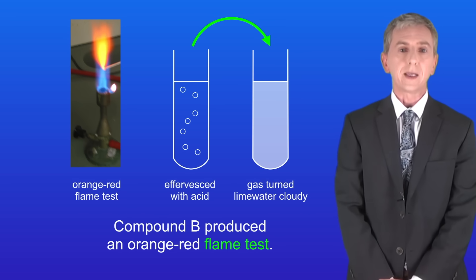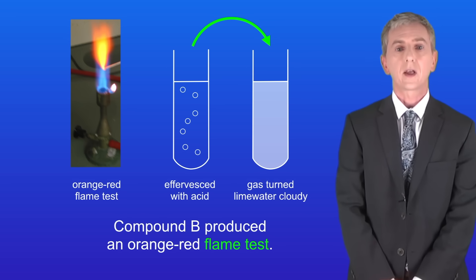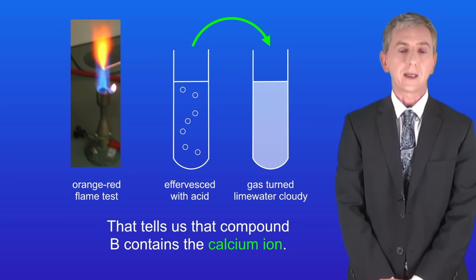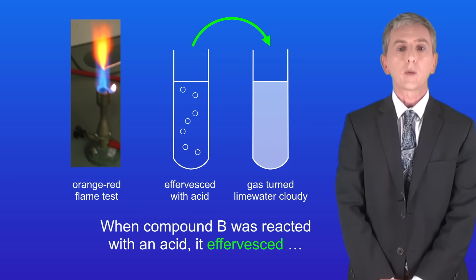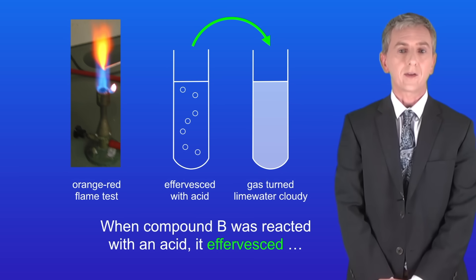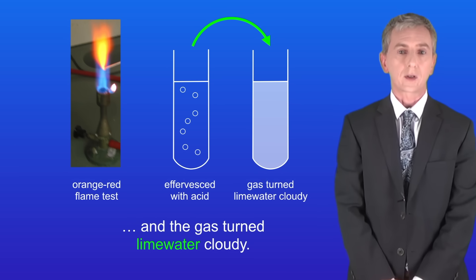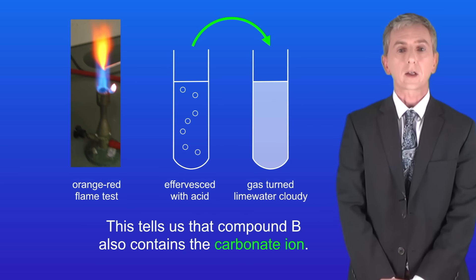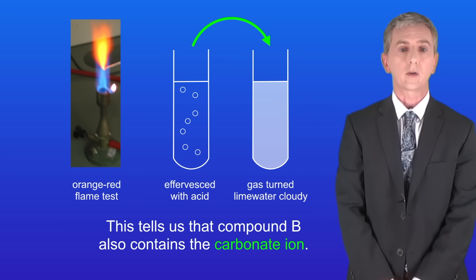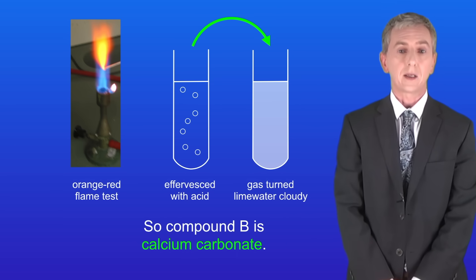Compound B produced an orange-red flame test, which tells us that compound B contains the calcium ion. When compound B was reacted with an acid it effervesced and the gas turned lime water cloudy. This tells us that compound B also contains the carbonate ion. So compound B is calcium carbonate.